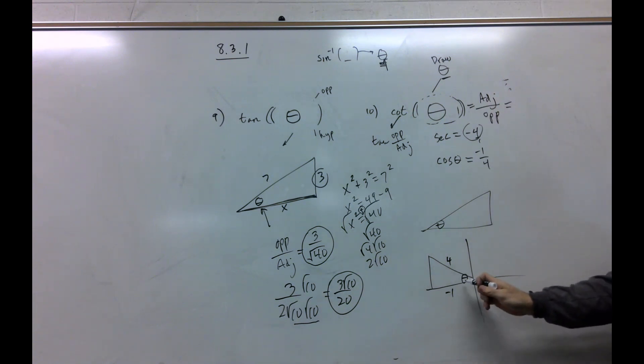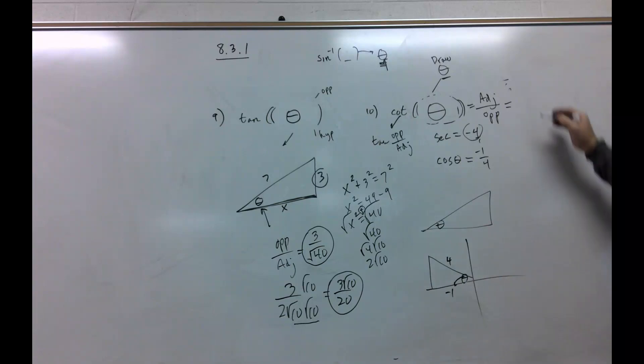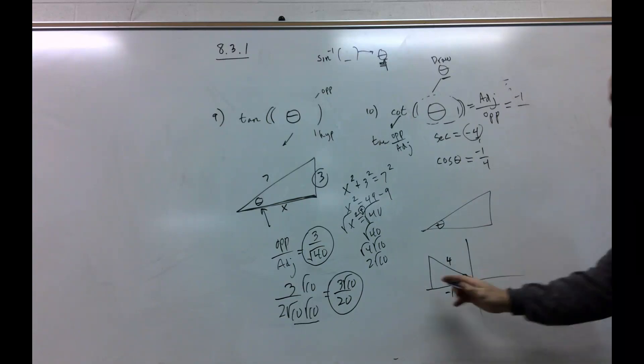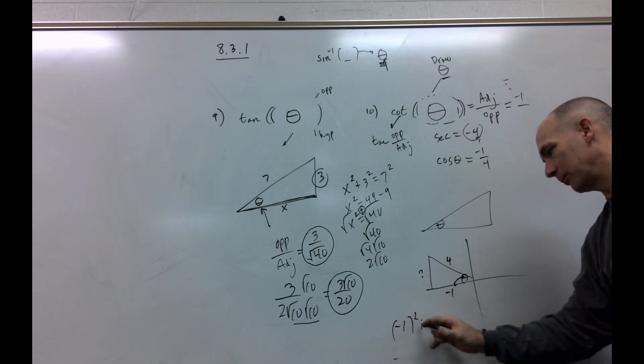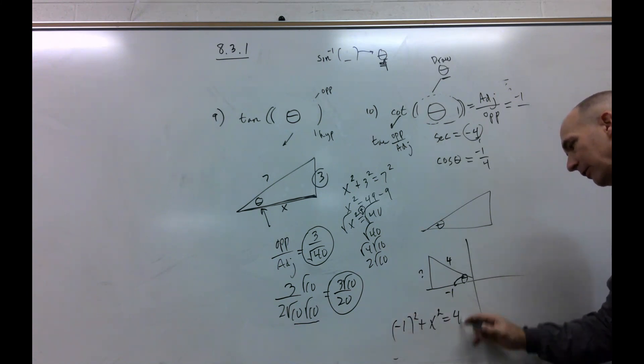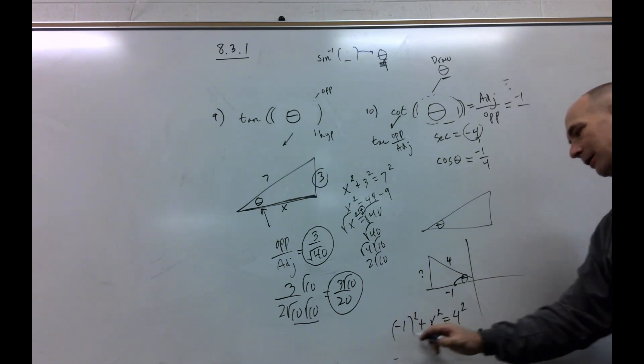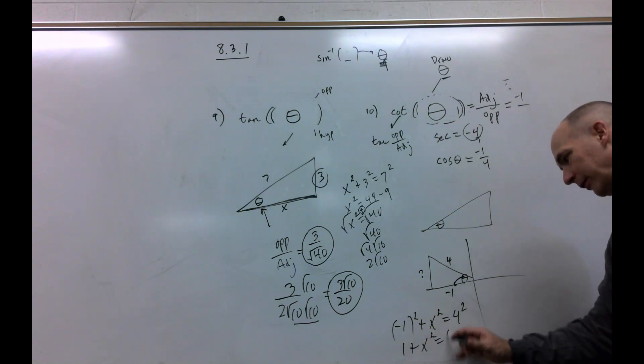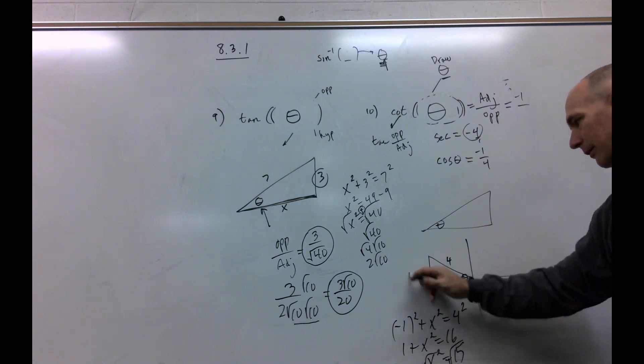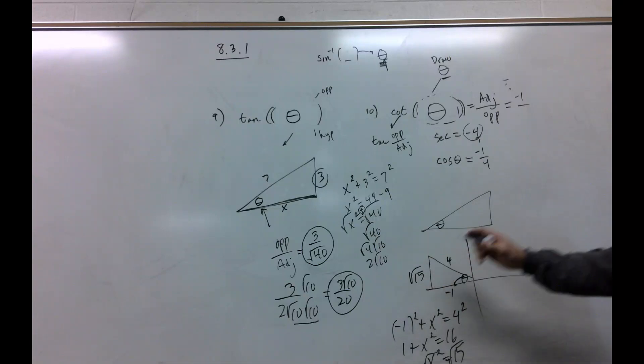What's that? Well, my adjacent side is negative 1. My opposite side is right here. So, I've got to go a squared plus b squared equals c squared. That's 16. This is 1 plus x squared equals 16. So, x squared equals 15. Take the square root of both sides. And that's what this is. The square root of 15. And that's my opposite side.